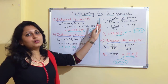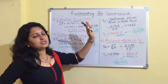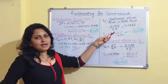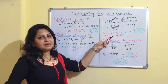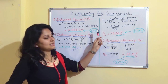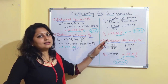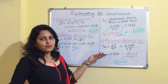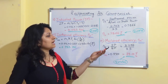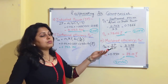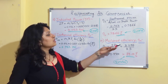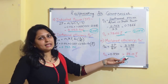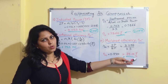Moving on to isothermal efficiency: substituting the values into the formula, we get 78.66%. The final point is mechanical efficiency. The formula is mechanical efficiency = indicated power / brake power (shaft power). Substituting both values, we get mechanical efficiency = 89.01%.